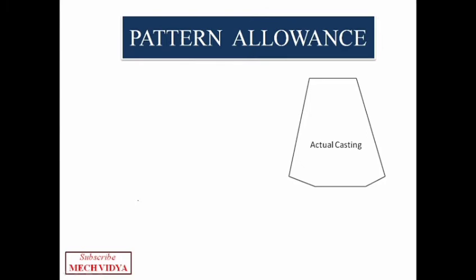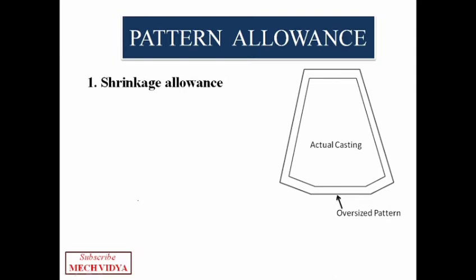So what is the pattern allowance? Suppose we want to create a metal part of this shape, so my pattern has to be slightly oversized than the actual dimensions that I need. There are two reasons behind making the pattern slightly bigger than the actual casting. The first is that we have to provide shrinkage allowance.